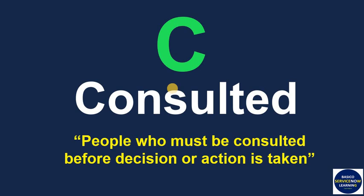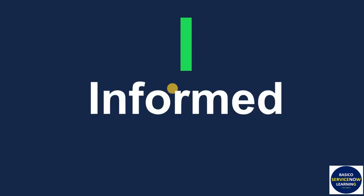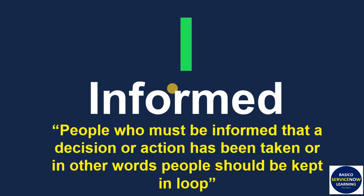The final letter I stands for Informed. We give I to those people who must be informed that a decision or action has been taken — in other words, people kept in the loop. For example, when we write any email, we keep lots of people in CC. Even though those people are not working on any of the tasks, we are informing them that this task is in progress or has been completed.